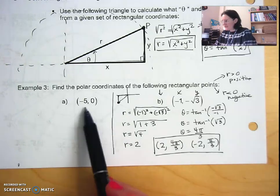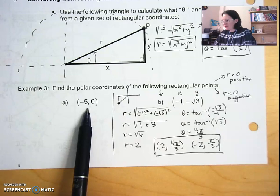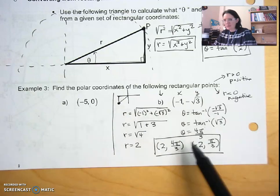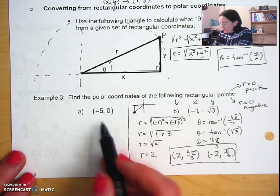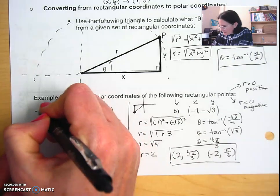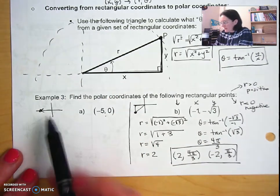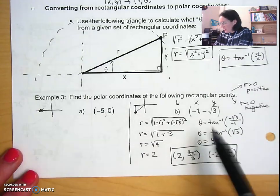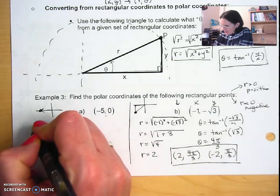Now the reason why I wanted to save this one for a second is because we can actually work smarter not harder here and avoid this work, because it's on an axis. If I draw my point, my original point at negative five zero, it's not a triangle. I don't have a reference triangle, so I don't actually need to do this math. I can just use my common sense a little bit.